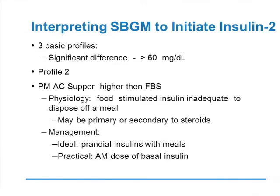Second profile: her supper sugar is higher than her fasting sugar — the exact opposite. Her beta cell, when not stressed, produces enough insulin to maintain hepatic glucose output. But the moment she eats, she cannot produce enough insulin to handle the meal. She needs help during the day. The ideal would be short-acting insulin with each meal, though most patients don't like that. You might give her a basal starting in the morning and see what happens to her meals. In this circumstance you are at risk for over-basalization.